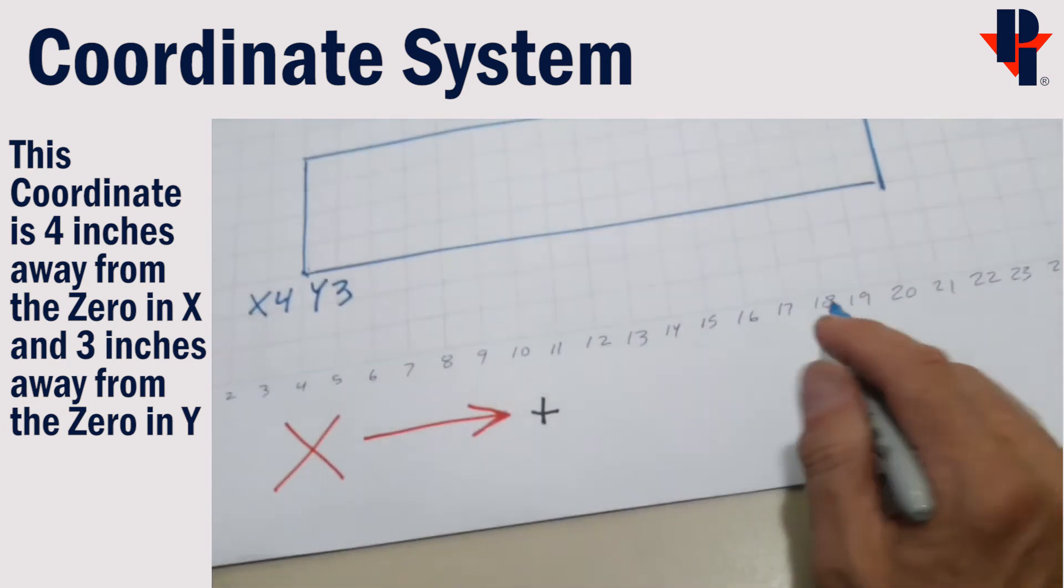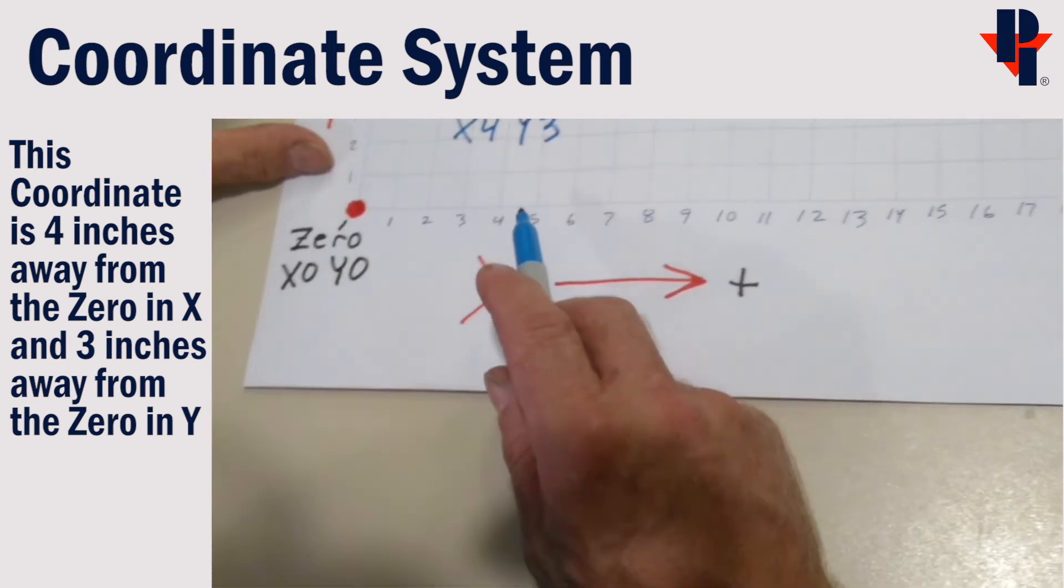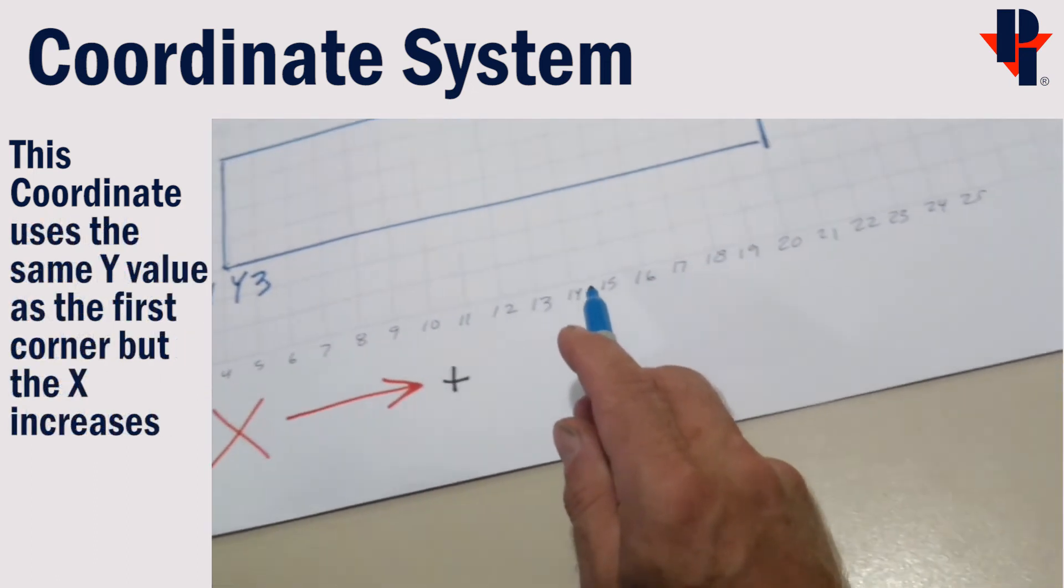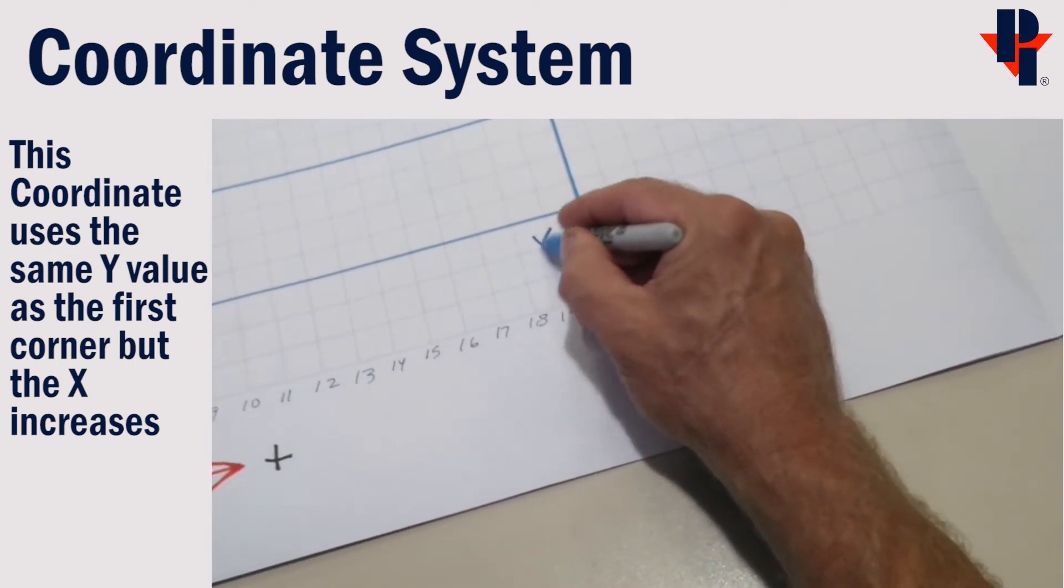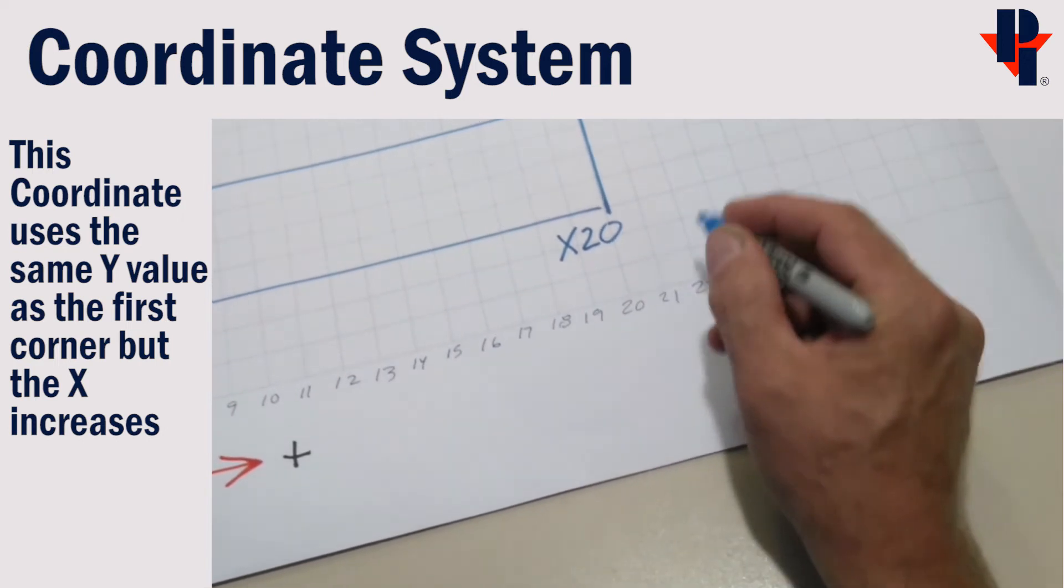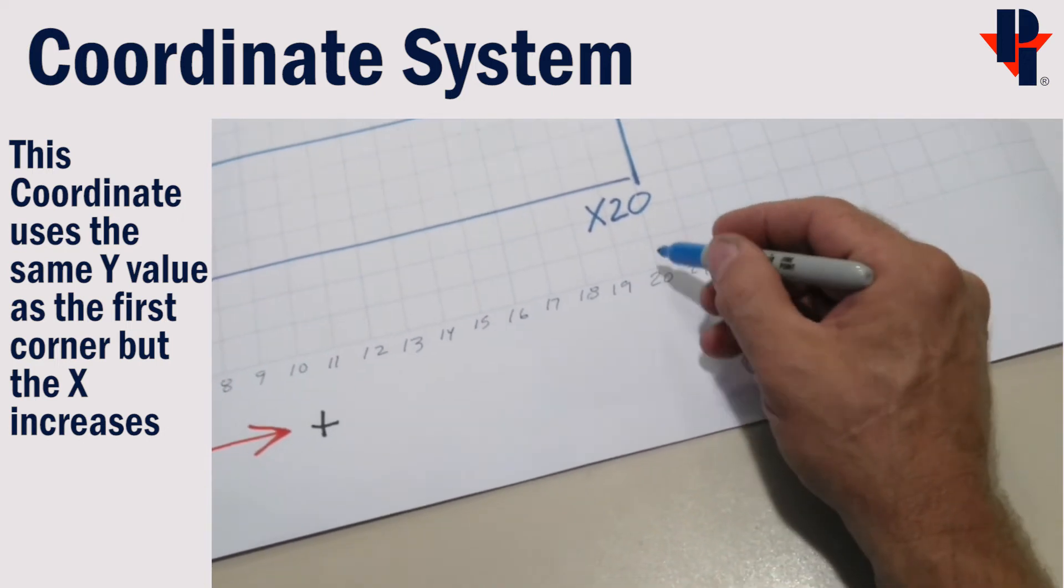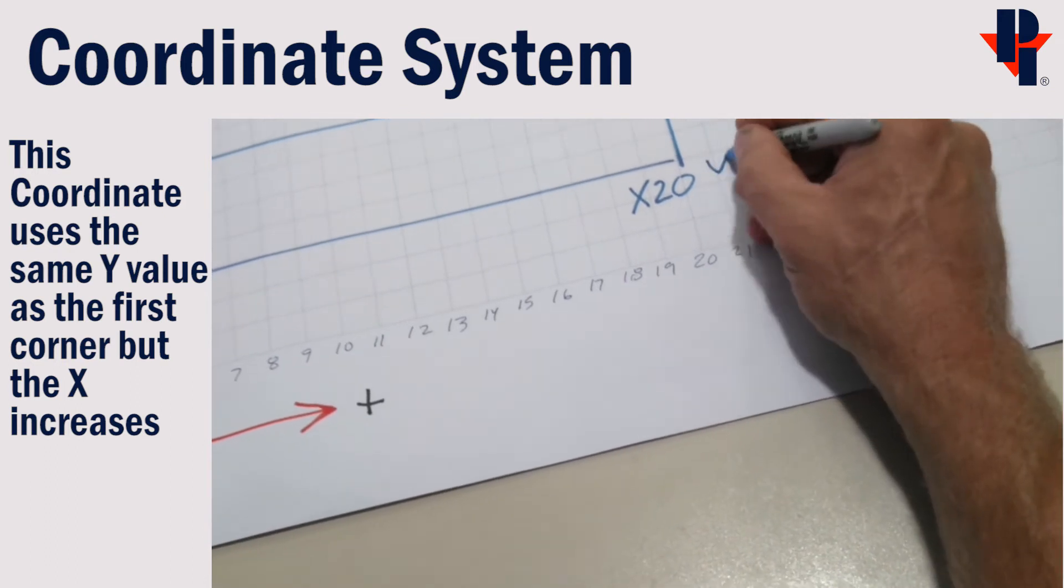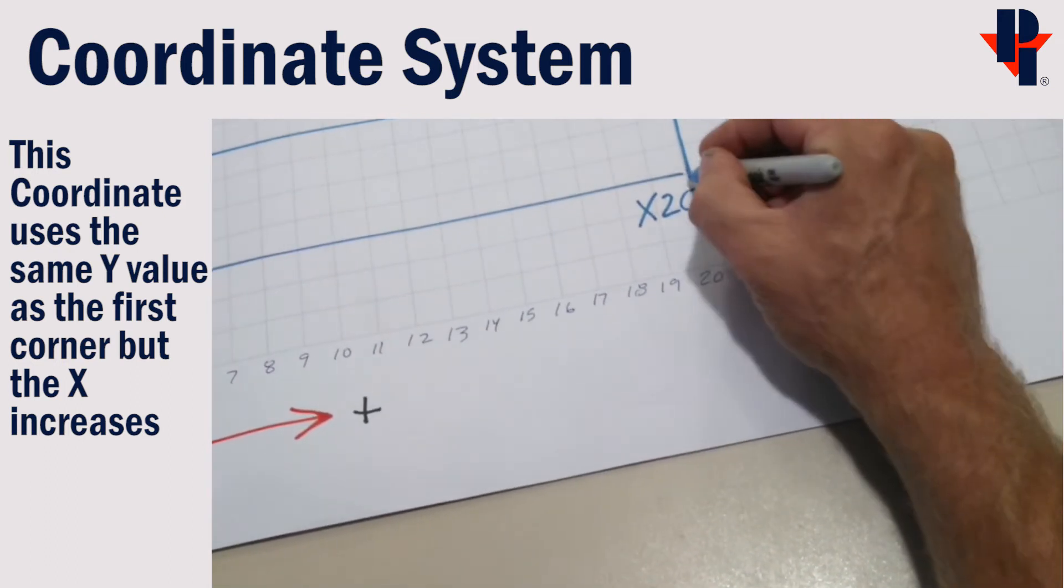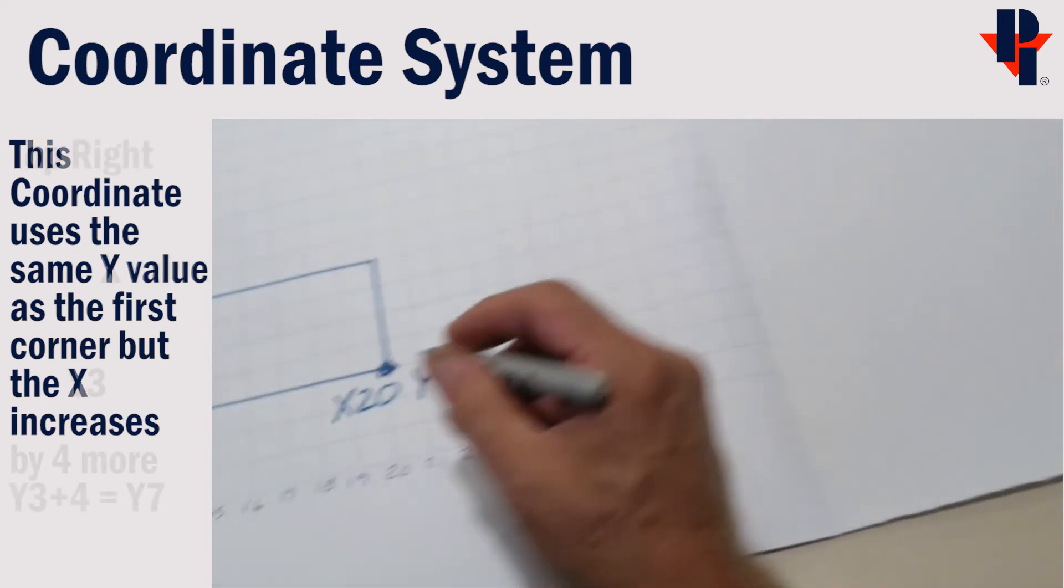Next we'll identify the coordinates for the bottom right corner of our rectangle, counting over in the x, we get up to 20. So x will be 20. And now, counting up in the y, we see that y is 3. This corner is x20, y3.